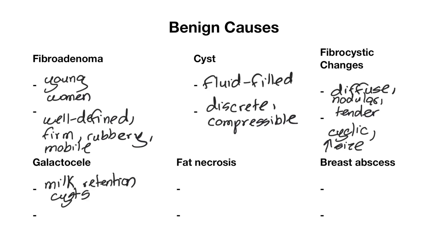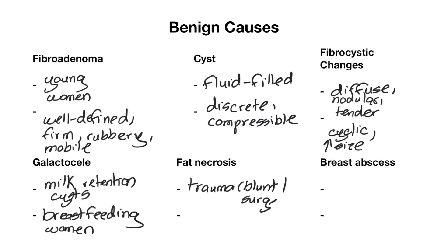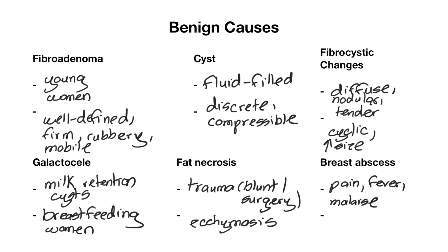A galactocele is a milk retention cyst found in women who are breastfeeding. Fat necrosis is often the result of trauma, whether blunt or surgical, and you can sometimes find overlying ecchymosis or bruising on clinical exam. Breast abscesses are localized collections of pus that often develop in situations like mastitis or cellulitis in the breast. They present with pain, fever, and malaise, and are often described as a tender, fluctuant mass.